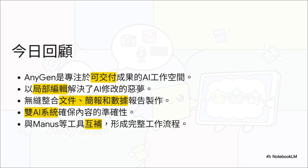快速回顾今天的重点：第一，Anygen是专注于可交付成品的AI工作空间。第二，它用局部编辑解决了修改噩梦。第三，无缝整合文件、简报和数据，一站搞定。第四，独到的双AI系统确保内容准确度。最后，它跟Manus是最佳拍档，可以组合出超强的工作流。